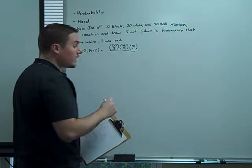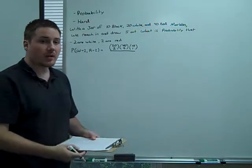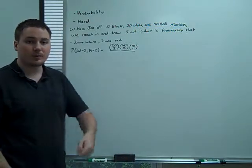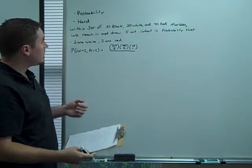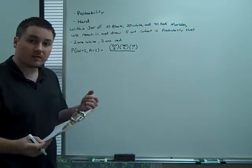We're going to divide this by the size of our sample space. Our sample space is the number of ways that we can pull things out of this jar, and there are 70 choose 5.